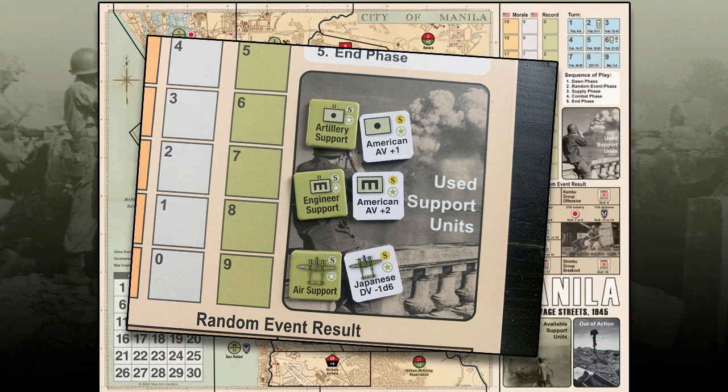The back of each counter shows the effect each support unit provides. Artillery support gives plus 1 attacking value. Engineering support gives plus 2 attacking value — there is also an optional rule dealing with rubble we'll get into later. Air support, the most powerful of all, lets you roll 1d6 and subtract that from the defensive value of the Japanese units. During the supply phase you buy these and put them in the available support box. The number of support units you can add to any attack is limited by the number of units you are attacking with — so attacking with 3 units allows up to 3 support units.